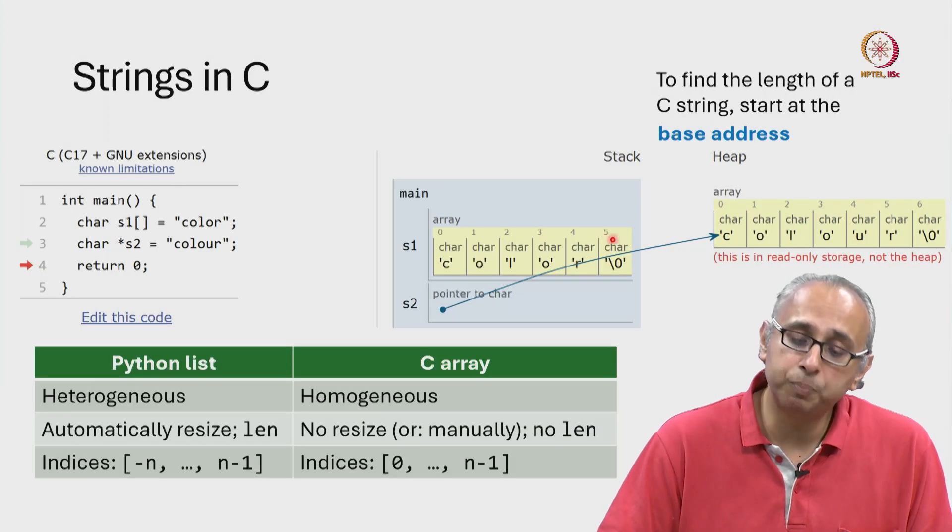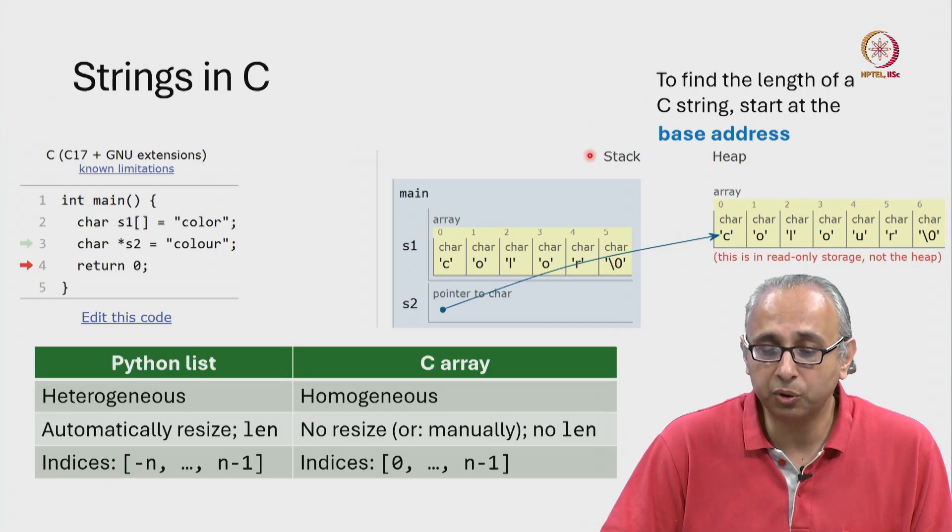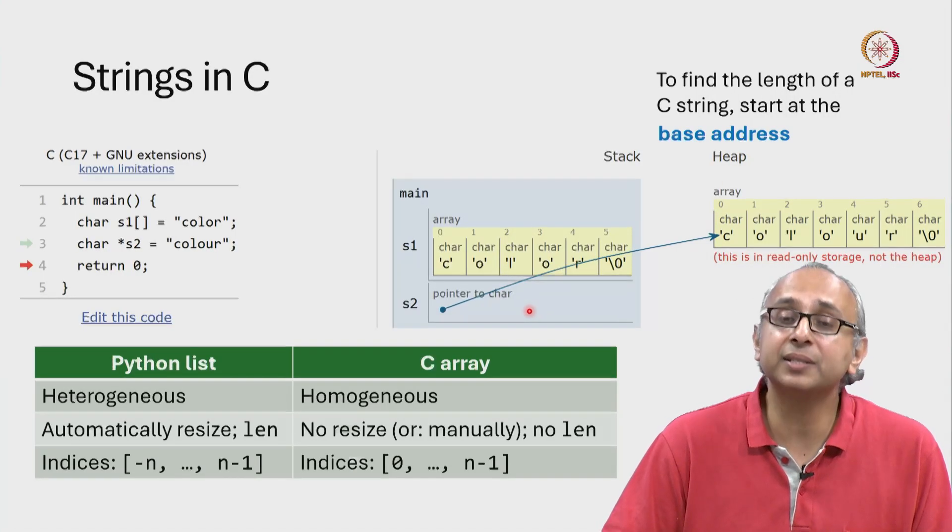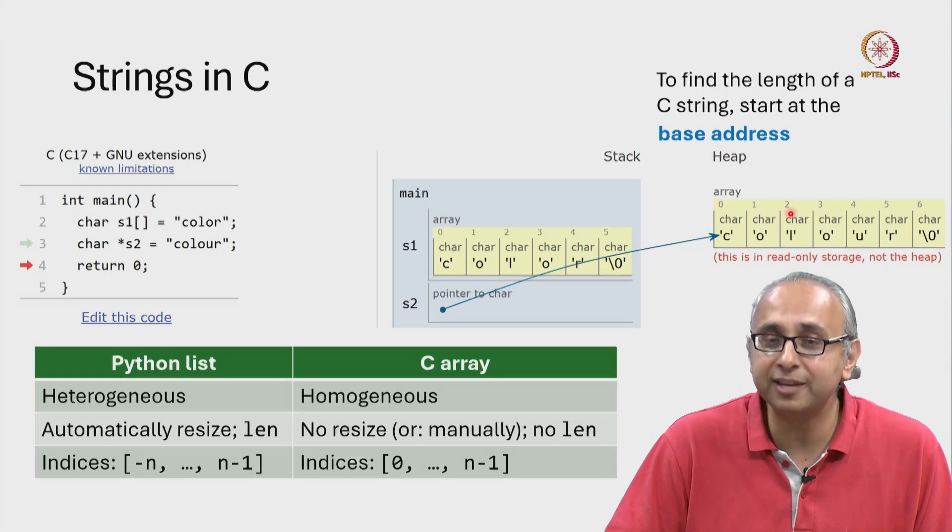So it turns out there are two parts of memory: something called the stack and something called the heap. And Python Tutor is telling us that although I'm visualizing this for you as if this is on the heap,